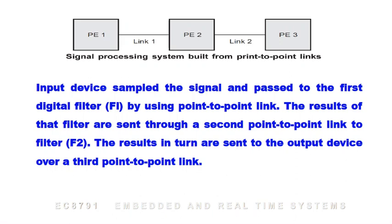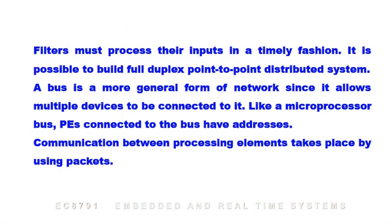In a point-to-point signal processing system, PE1, PE2, and PE3 are linked sequentially. An input device samples the signal and passes it to the first digital filter. Using a point-to-point link, the result of that filter is sent to filter 2, and the final result is sent to the output device over a third point-to-point link. Filters must process their inputs in a timely fashion. It is also possible to build full-duplex point-to-point distributed systems.